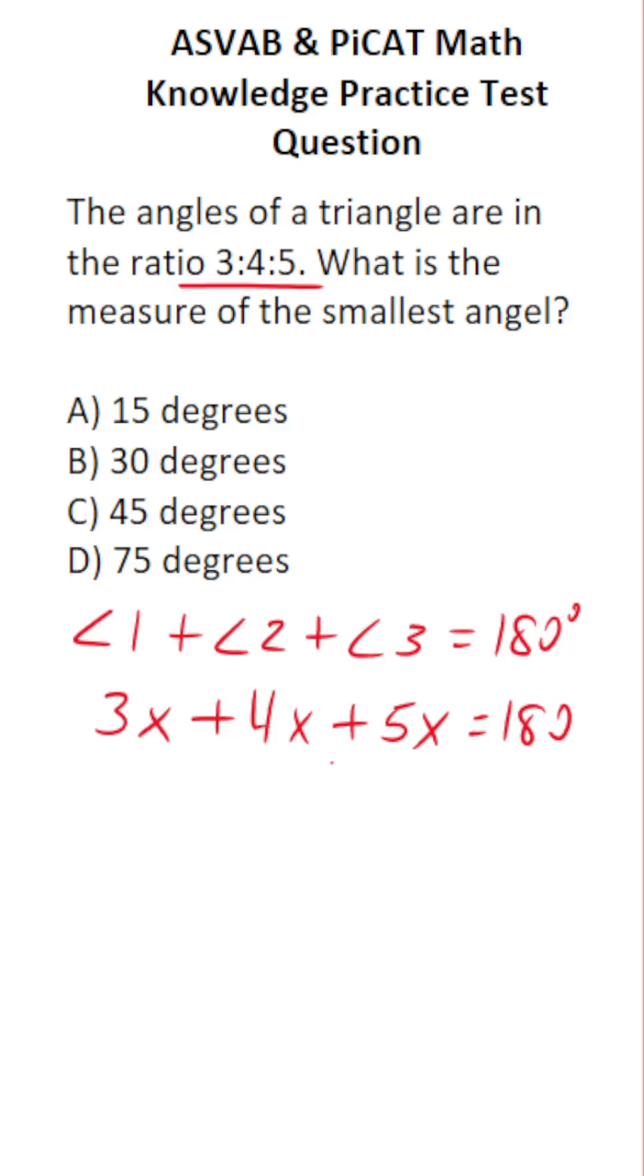So I can solve for x, and then by multiplying x by 3, I'll know that measure of angle 1 here. 3x plus 4x plus 5x is going to be 12x equals 180.